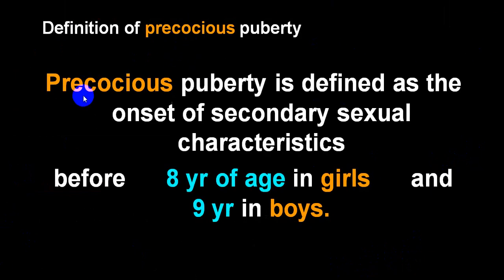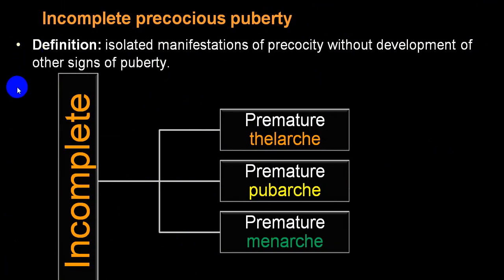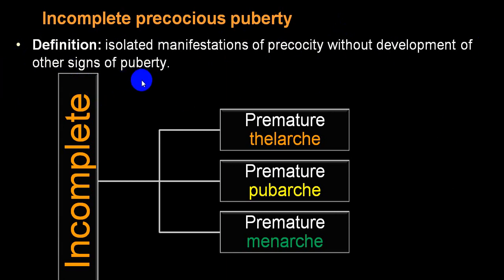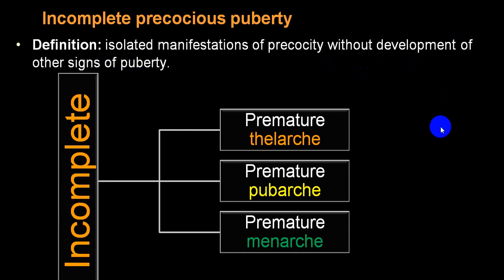Precocious puberty means it occurs early — onset of secondary sexual characters in a female before age 8 and in a boy before age 9. Incomplete precocious puberty means isolated manifestation without development of other signs of puberty: no full development of breast tissue, pubic hair, voice deepening, etc. It can be divided into three types depending upon thelarche, pubarche, and menarche — premature thelarche, premature pubarche, or premature menarche — but without full development of puberty signs.